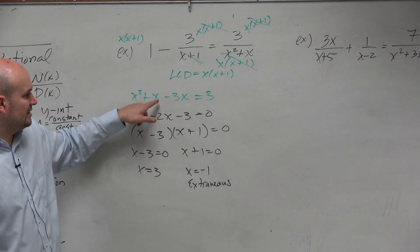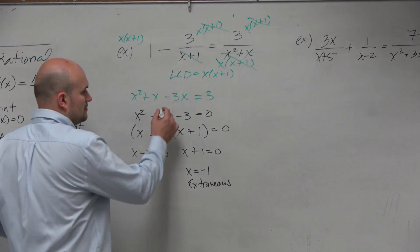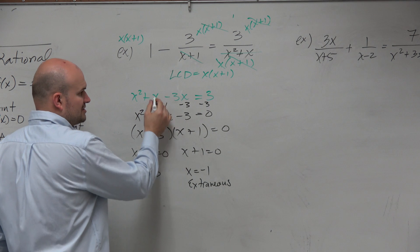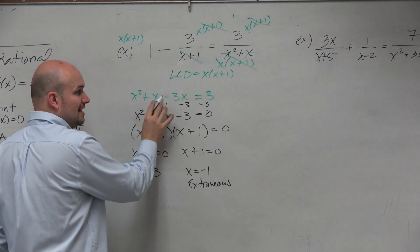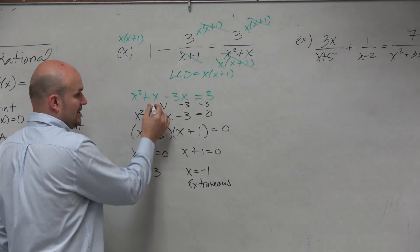I just subtracted a 3 and did x minus 3x is negative 2x. You have $1, you borrow $3, you owe me $2. Because that's a 1 right there.